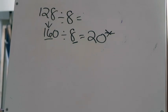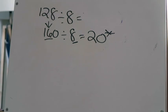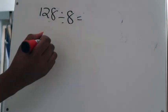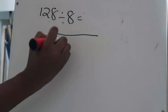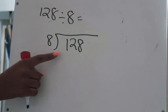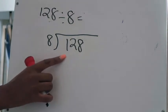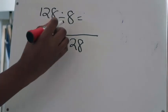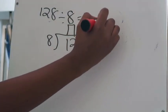My estimated answer of 20 tells me the first digit of the real quotient for 128 divided by 8 should be in the tens place. Now I draw my division house, put the dividend 128 inside and the divisor 8 on the outside. To place the first digit correctly, I find the digit in the tens place in my dividend — which is the 2 — and box the space above it, because that's where the first digit needs to go.